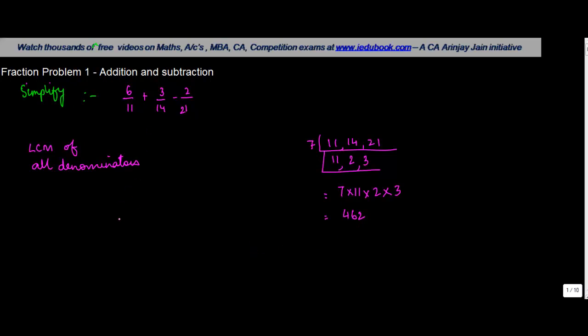So when you find out the answer to this fraction, this will have 462 as the denominator because the LCM of all the denominators becomes the denominator. Now, to see basically how does it fare in terms of each one of these, let's take first 6 upon 11.